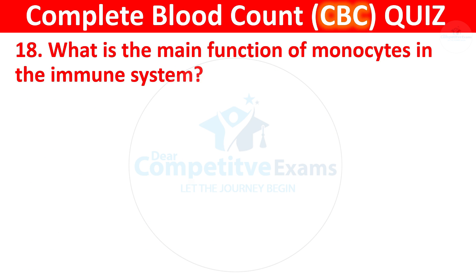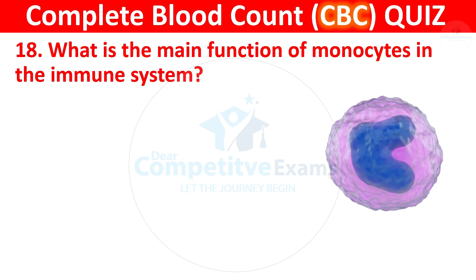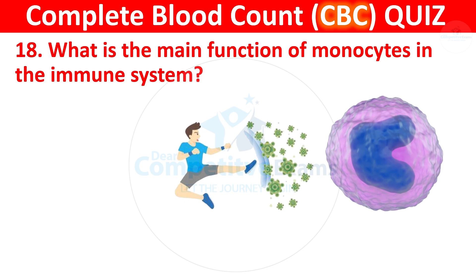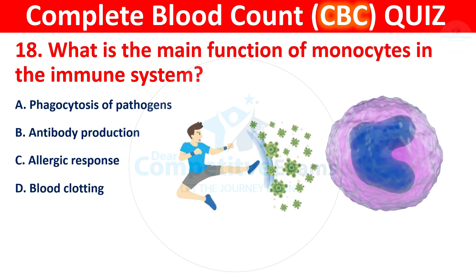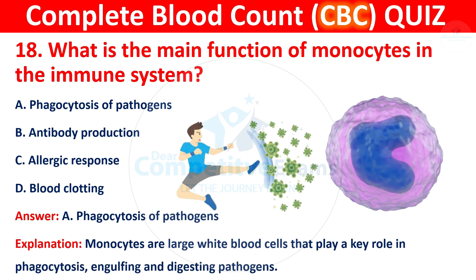Question 18: What is the main function of monocytes in the immune system? Your options are phagocytosis of pathogens, antibody production, allergic response, or blood clotting. The correct answer is A, phagocytosis of pathogens. Monocytes are large white blood cells that play a key role in phagocytosis, engulfing and digesting pathogens.